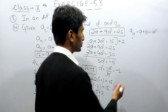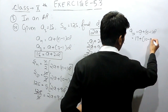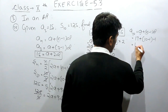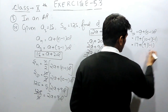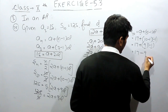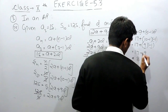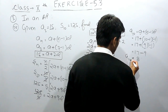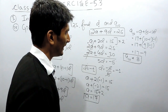Now substituting a = 17, n = 10, and d = -1 into the nth term formula: a10 = 17 + (10-1)×(-1) = 17 + 9×(-1) = 17 - 9 = 8. The 10th term of the AP is 8.